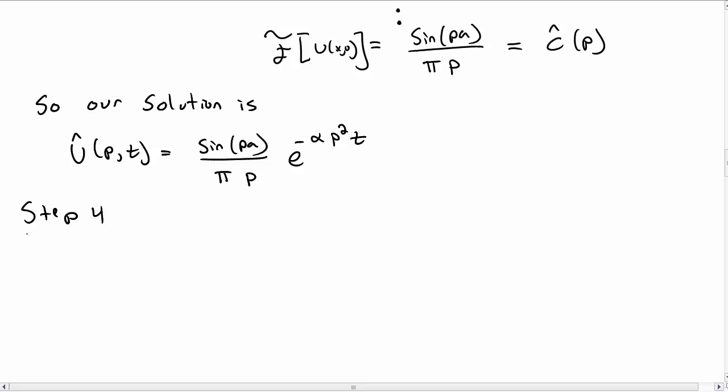So this is the solution, but it's not a solution in space and time. So what we need to do is inverse Fourier transform our solution back, so that our solution is a function of x and t.